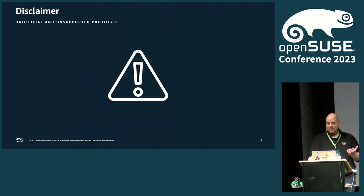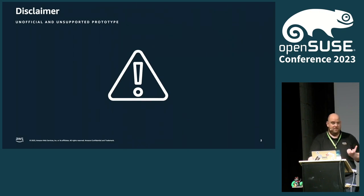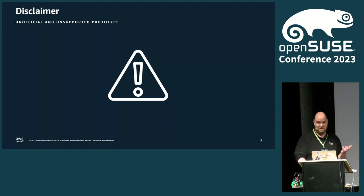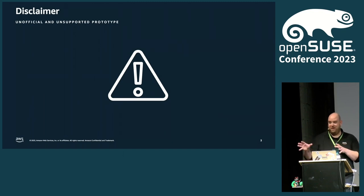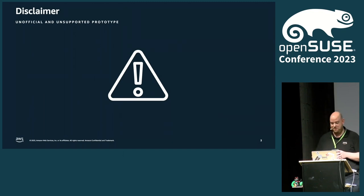The motivation behind that — why I did this — is that I'm excited about the next generation operating system. I wanted to test it, but unfortunately SUSE didn't provide an AMI, so I had to build one. Statements I made today are based on my personal interpretation and understanding of publicly available information from SUSE, and are definitely subject to change.